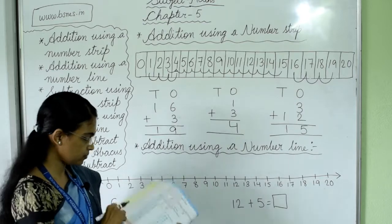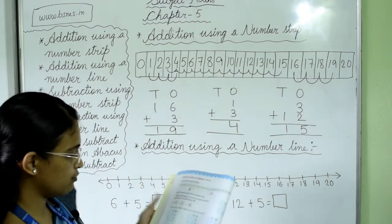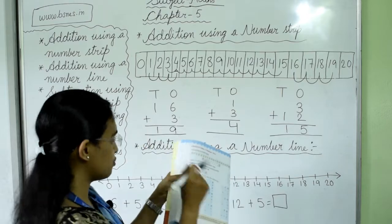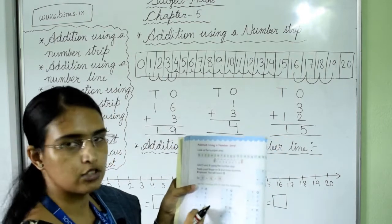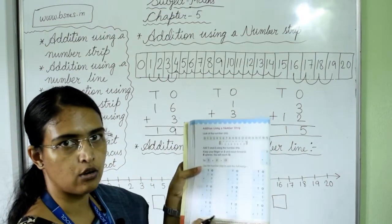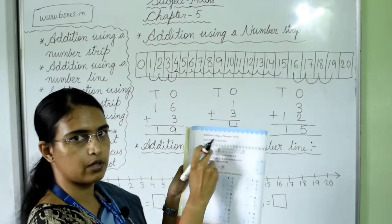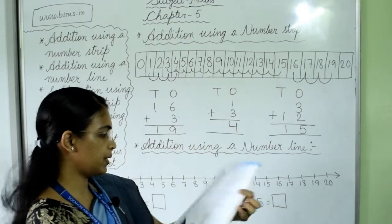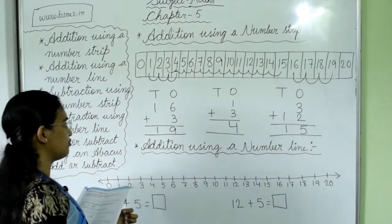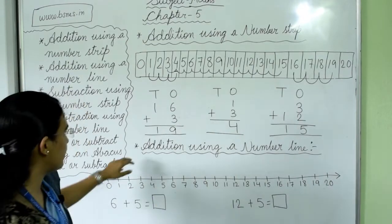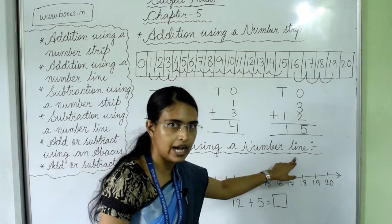I have shown you a few sums from this page. The rest of the sums you will do at home — this is your homework — using this number strip. Now turn the page to page number 55. We will do our next point, which is addition using a number line.